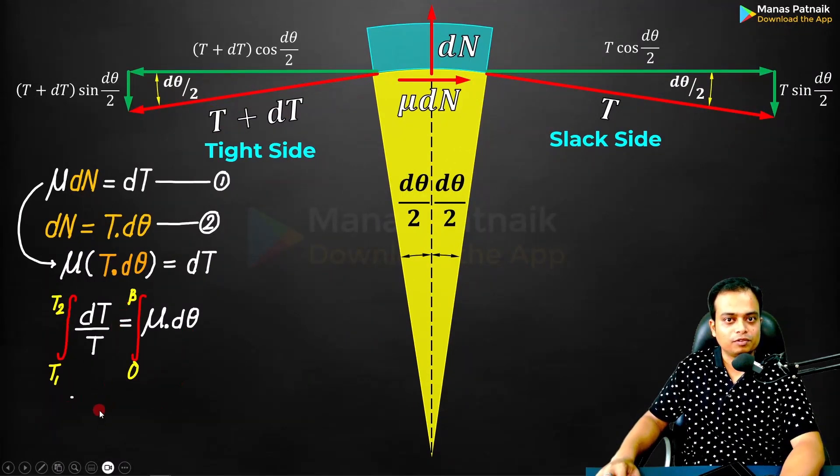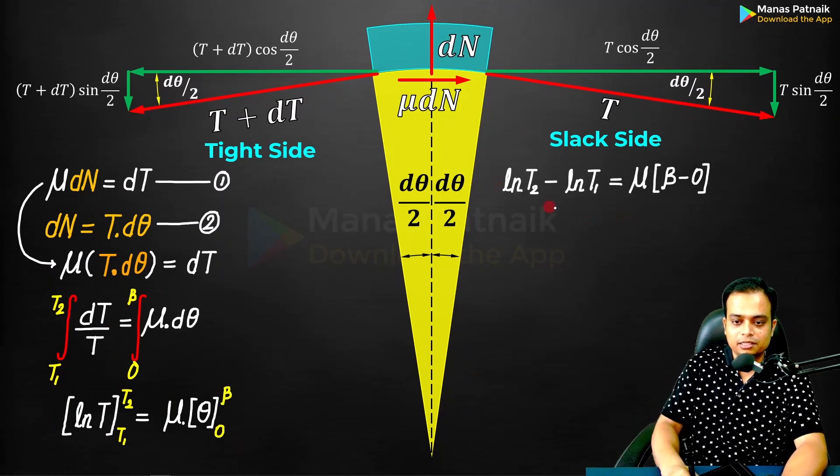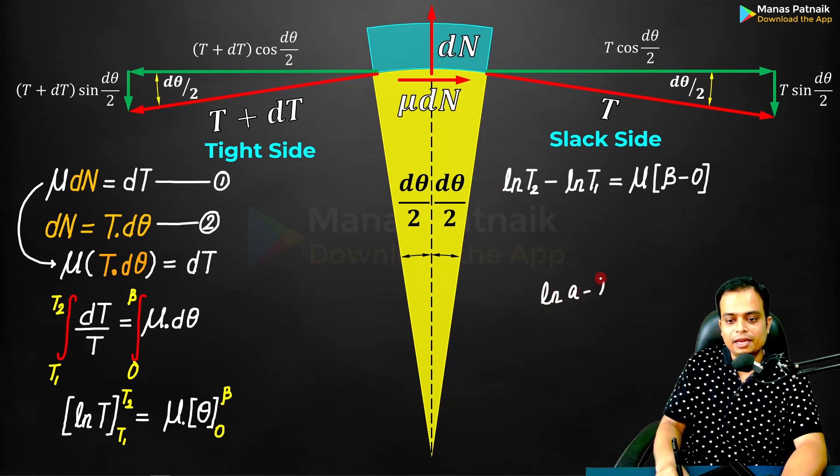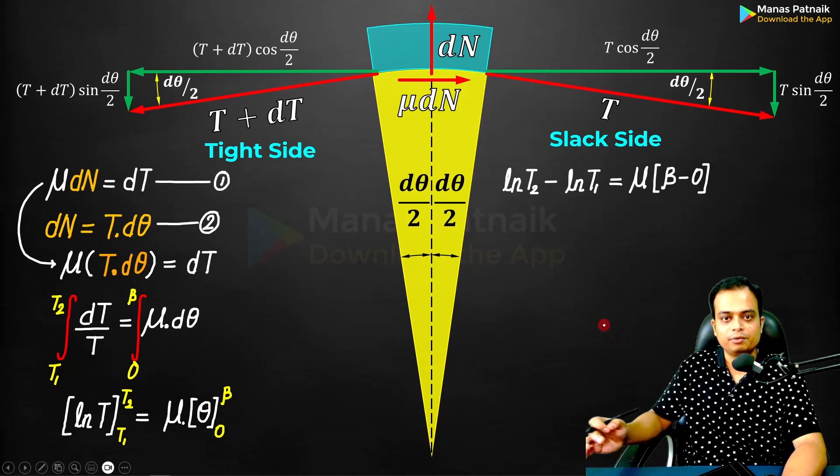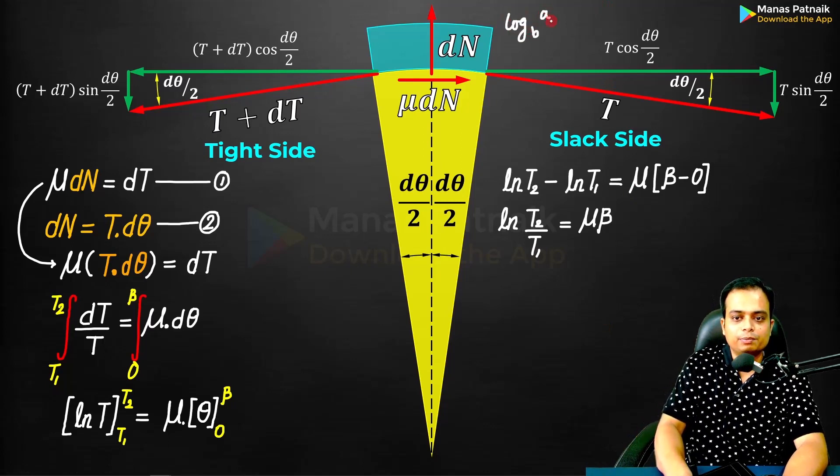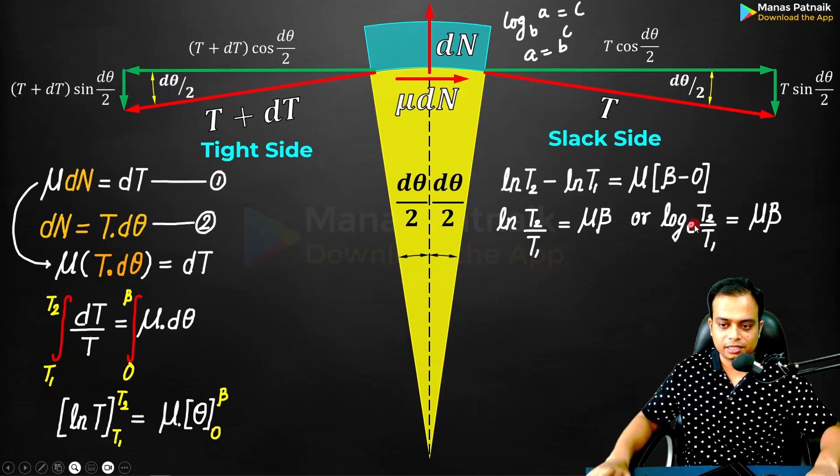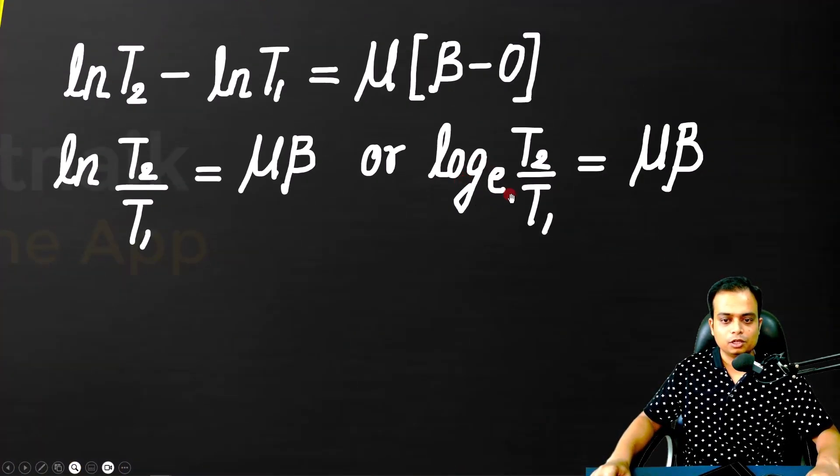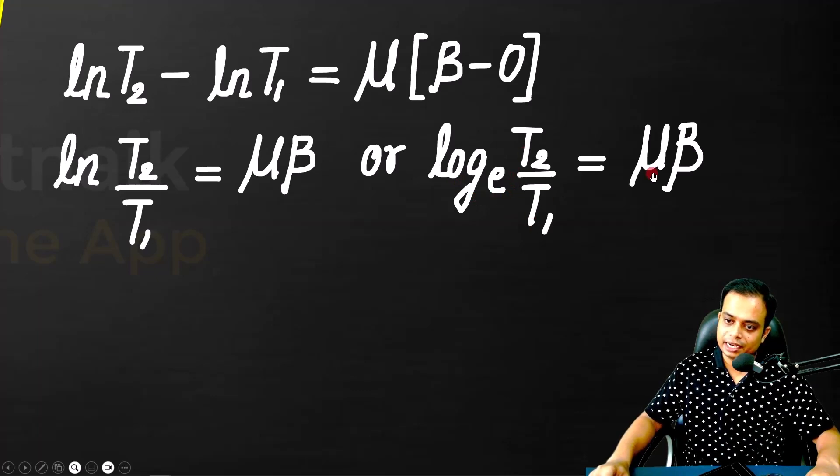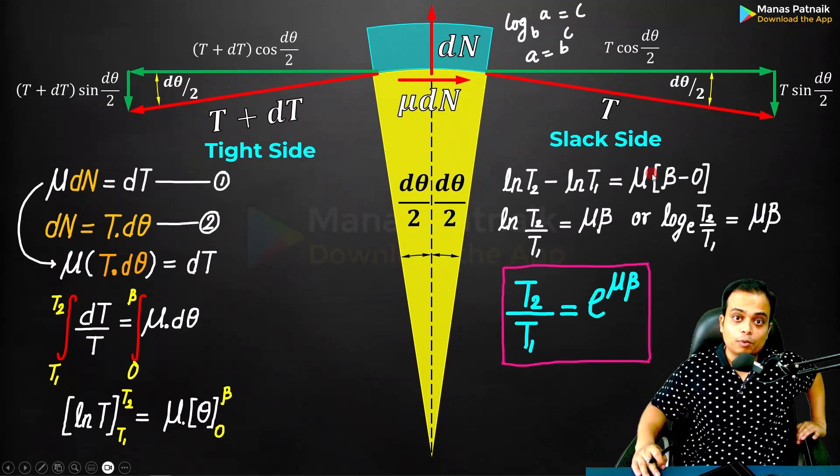Here we go: T1 to T2, 0 to β. Solve. This is natural log. Then you can plug in the limits: ln T2 - ln T1. This is the same as ln(a) - ln(b) = ln(a/b). Simply write. You also know that log of a base b equals c, then you can write a = b^c. In that same fashion, let me write this in a much more familiar term. T2/T1 = e^(μβ). This is the relationship that we wanted to derive.